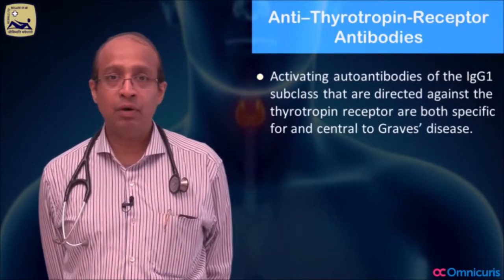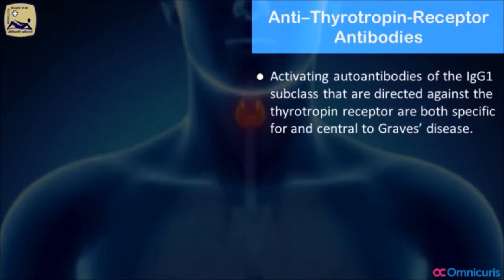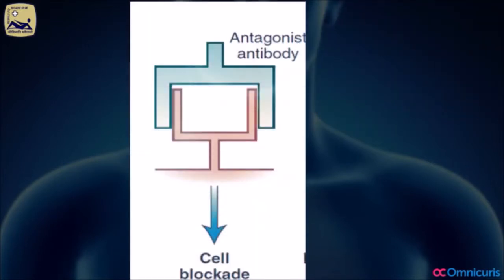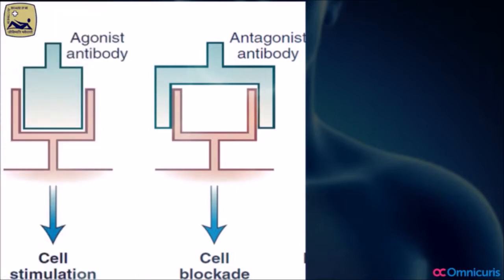A little bit about these antibodies. These antibodies can block the secretion of the thyroid gland — when they block, we call it a blocking antibody. The one in the middle is the blocking antibody, and when you have a blocking antibody you get hypothyroidism. On the left hand side you have the agonist antibody, which is the stimulating antibody, and you get the classical Graves disease — a thyroid disorder with excess secretion of thyroid hormones.